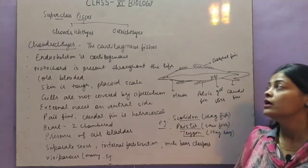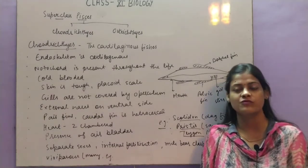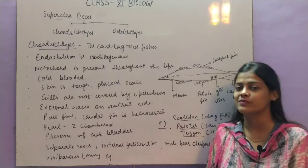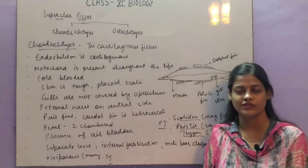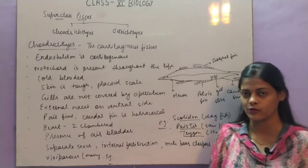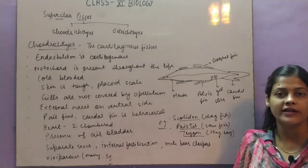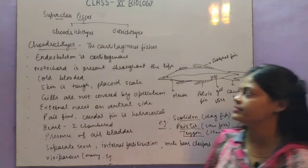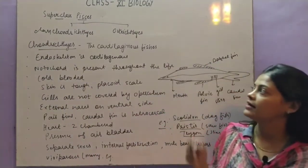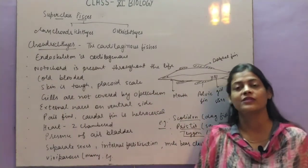In the jawed vertebrates, the super class Pisces is there, in which we include fishes with jaws. Before this we had jawless fishes, but here we will study fishes with jaws included in super class Pisces. Pisces is further divided into two classes: Chondrichthyes and Osteichthyes. First we will start with Chondrichthyes.